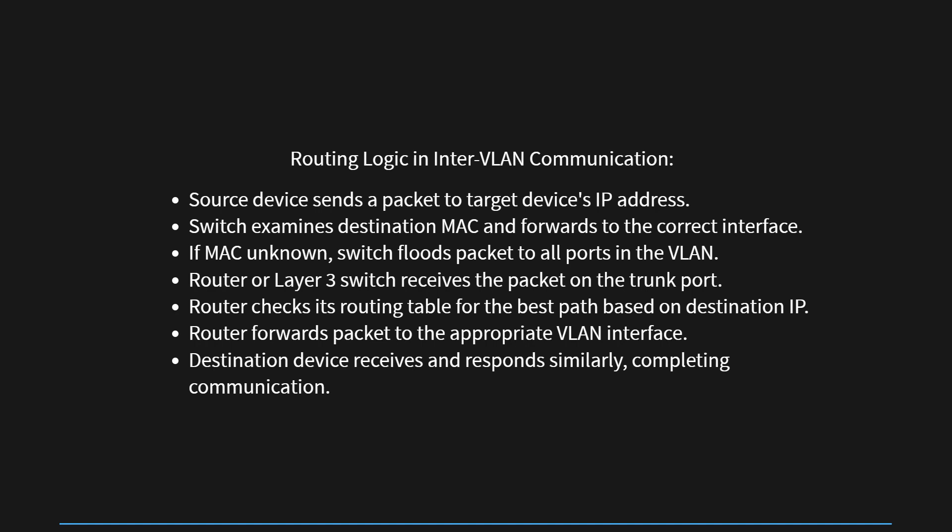Step 7: The destination device — for example, PC2 in VLAN 20 — receives the packet and responds in a similar manner, completing the communication process between the two devices in different VLANs. This process allows for efficient inter-VLAN communication while maintaining network security and segmentation.